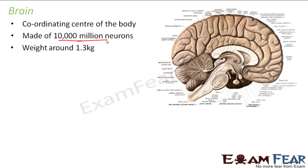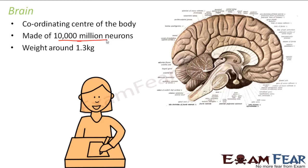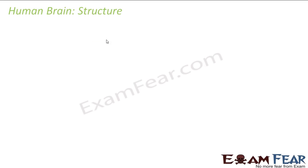The brain weighs around 1.3 kg — almost 1.5 kg of your body weight is the weight of your brain. Any work we do, the brain plays a very vital role. Now let us look at the structure of the human brain in a little more detail — what does it consist of that it functions so very efficiently?